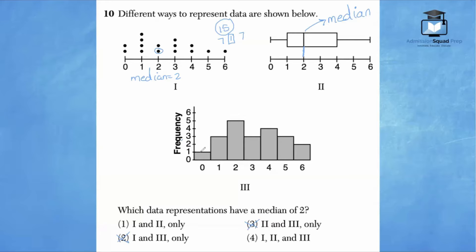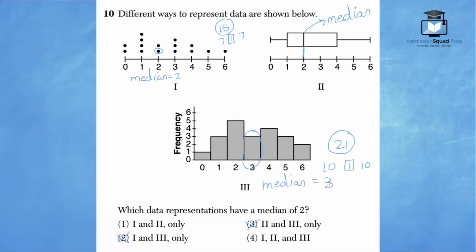For the histogram, counting all data points gives 21 total. The median is the 11th data point. Counting to the 11th value, it falls around 3, not 2. So the histogram does not have a median of 2. The correct answer is choice 1 — the dot plot and the box and whisker plot both have a median of 2.